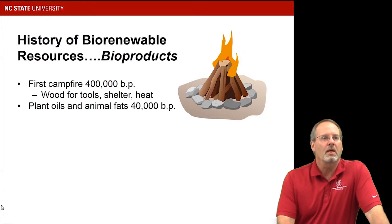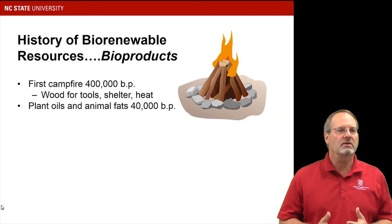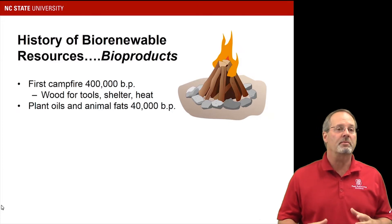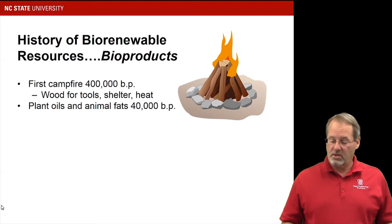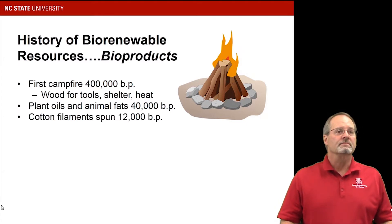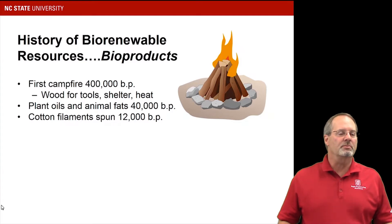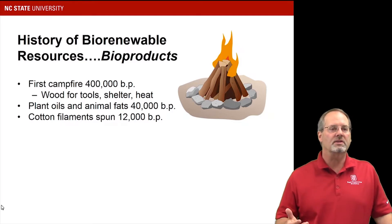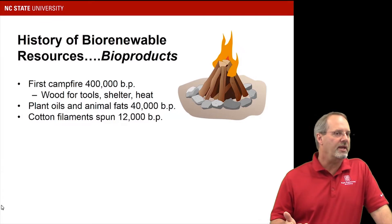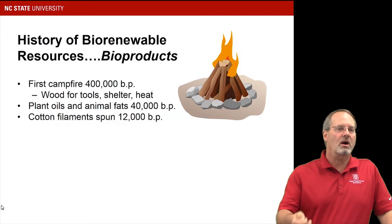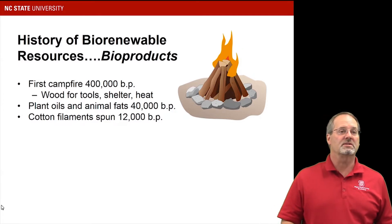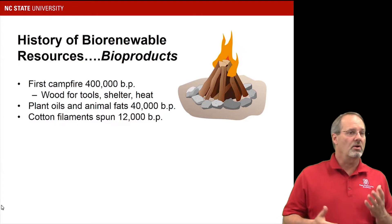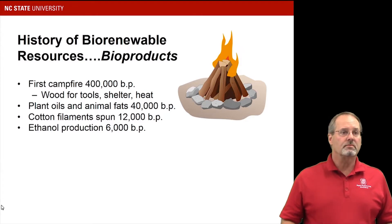About 40,000 years ago, people would take plant oils and animal fats, collect and store them, and use these bio-products for heating and cooking. There's evidence that cotton filaments were spun 12,000 years ago — another example of a renewable plant, cotton, that was harvested and spun for clothing to meet one of society's needs. As you can see, all these things are renewable.